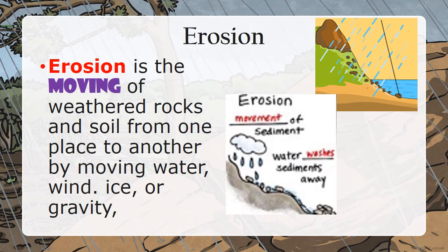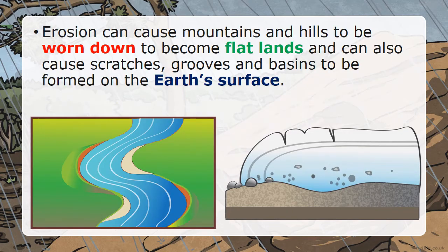Erosion is the moving of the weathered rocks and soil from one place to another by moving water, ice, wind, or gravity. Erosion can cause mountains and hills to be worn down and to become flatlands, and can also cause scratches, bruises, and basins to be formed on the earth's surface.